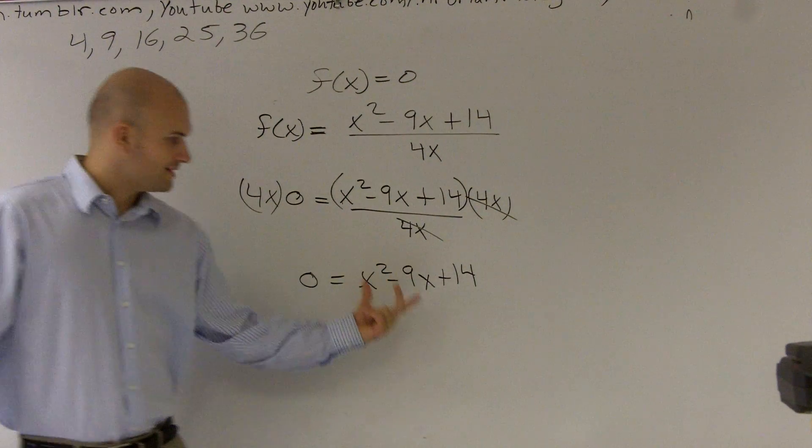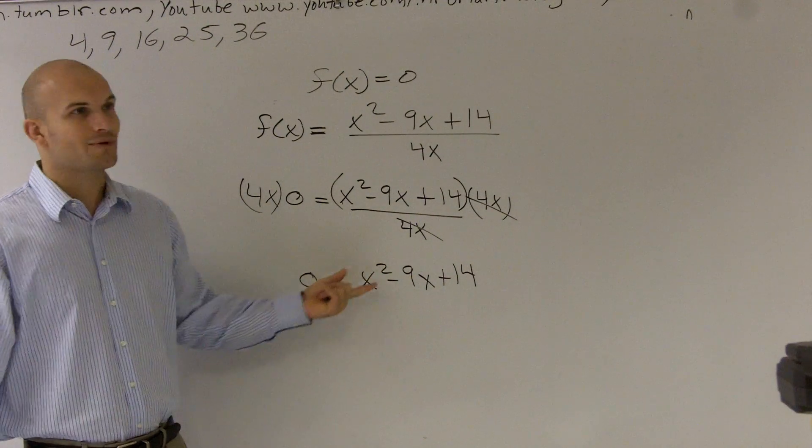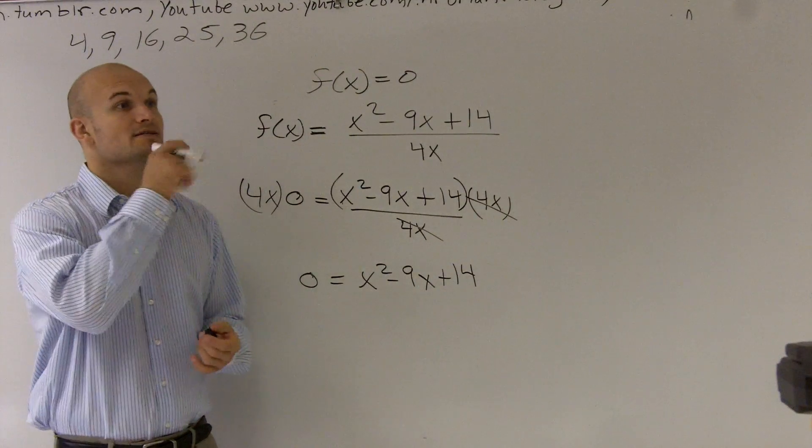So now I'm looking at these two values, and I say, all right, I need to find the value of x. Well, I have an x squared, and I have a negative 9x plus a 14. So we can't just solve for x, yes?